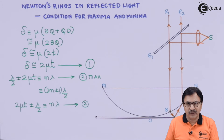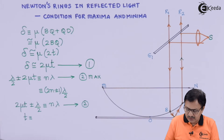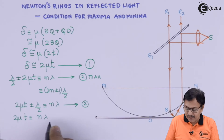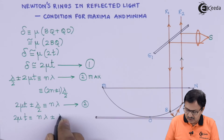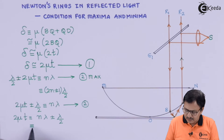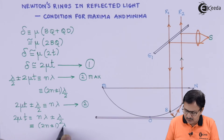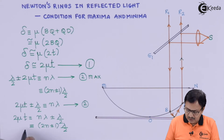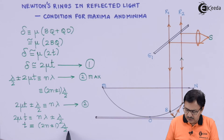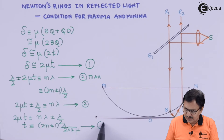The thickness condition for maxima simplifies to 2μt = nλ ∓ λ/2, which equals (2n ± 1)λ/2. Therefore, t = (2n ± 1)λ / (2 × 2μ). This is your final condition for the thickness at which you get a bright ring or constructive interference.